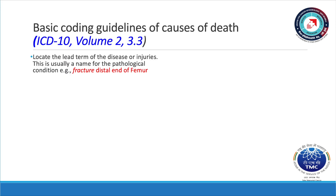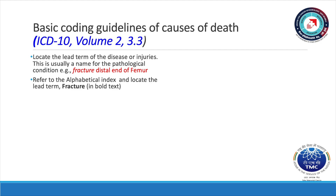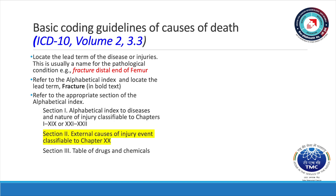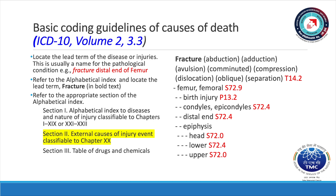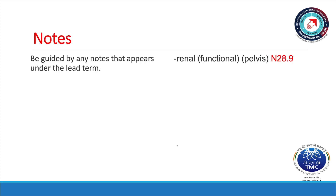Let's start with some basic coding guidelines with the example of coding fracture, distal end of femur. Start by locating the lead term of the disease or injury. The lead term is usually a name for the pathological condition — for example, an injury that caused a fracture, distal end of femur. Then refer to the alphabetical index in ICD-10 Volume 3 and locate the lead term — in this case, fracture in bold text. Make sure you refer to the appropriate section of the alphabetical index, Section 2, for the word fracture. Be guided by any notes that appear under the lead term.